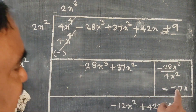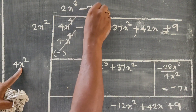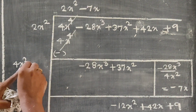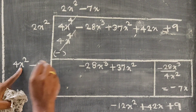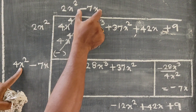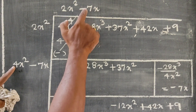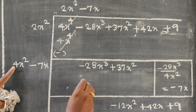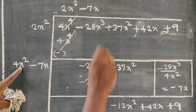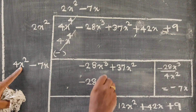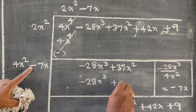If we do minus 7x, then 4 into minus 7 gives minus 28, and x² into x gives x³. So minus of minus is plus.